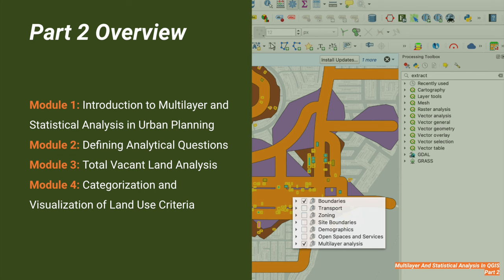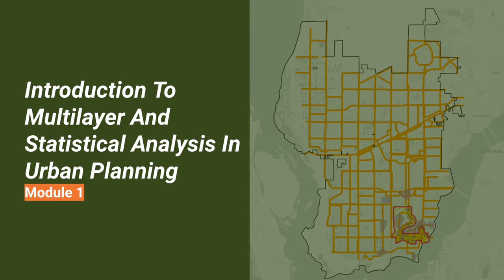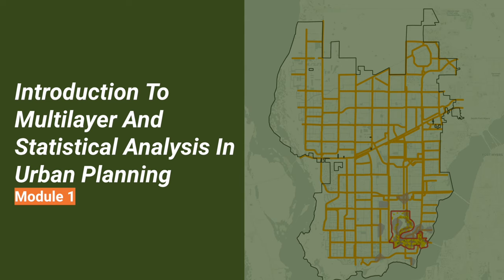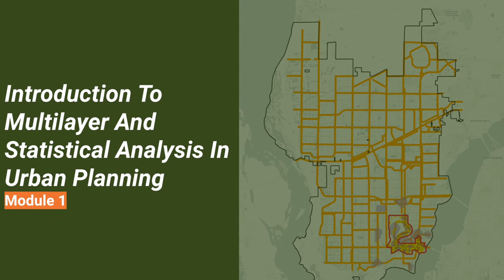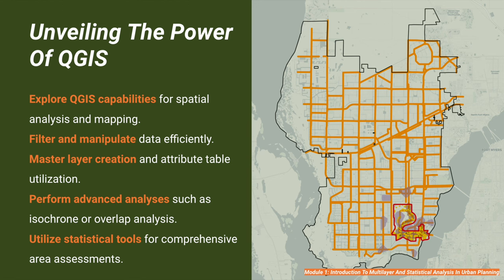Let's start with Module 1: Introduction to Multilayer and Statistical Analysis. Our journey begins with an exploration of QGIS — an open-source geographic information system that serves as a powerful tool for spatial analysis and mapping. Throughout this course, we'll delve into key features including how to filter data, create new layers, utilize the attribute table for calculations, generate isochrones, perform overlap analysis, and conduct statistical analysis for selected areas.